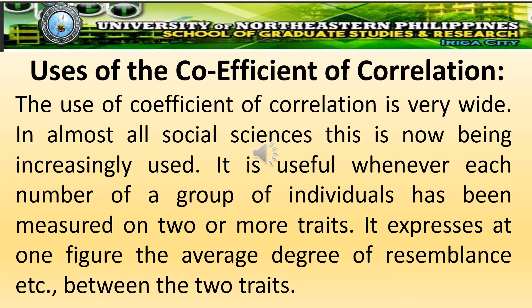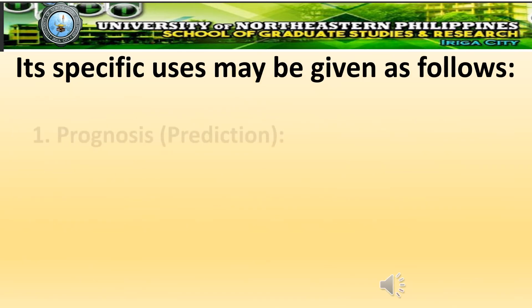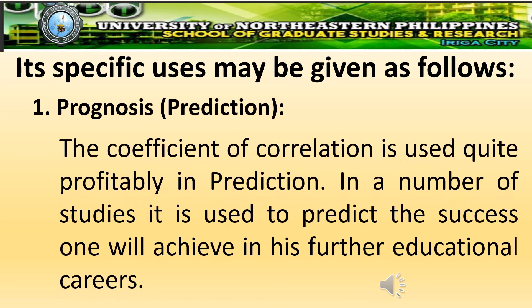Uses of the coefficient of correlation. The use of the coefficient of correlation is very wide. In almost all social sciences, it is now being increasingly used. It is useful whenever members of a group of individuals have been measured on two or more traits. It expresses in one figure the average degree of resemblance between the two traits. Its specific uses may be given as follows.